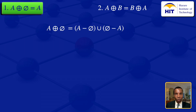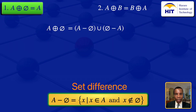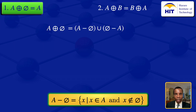We'll now go on and look at what is in the parentheses. To do that, we look at the definition of set difference. The set difference of A and the empty set is the set with elements X such that X is in A and X is not in the empty set. And the difference of the empty set and A is the set with elements X that are in the empty set and not in the set A. So this part gives us A and this part gives us the empty set, so we have A union the empty set.